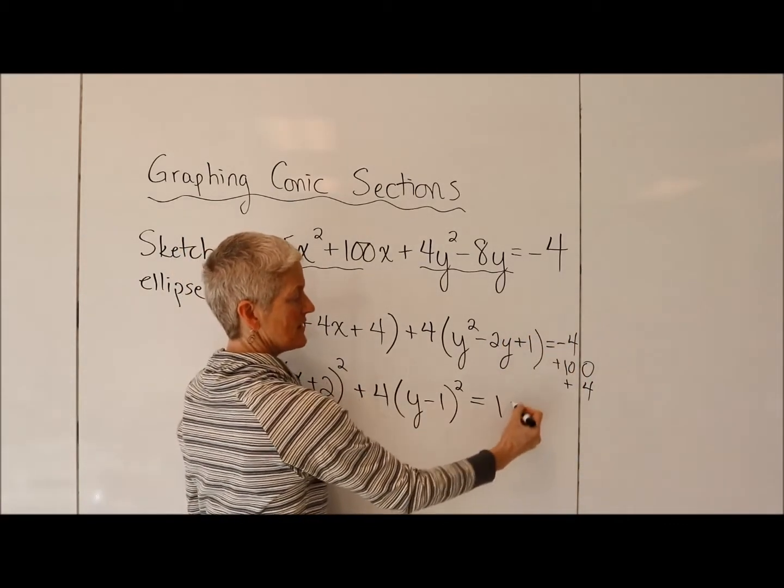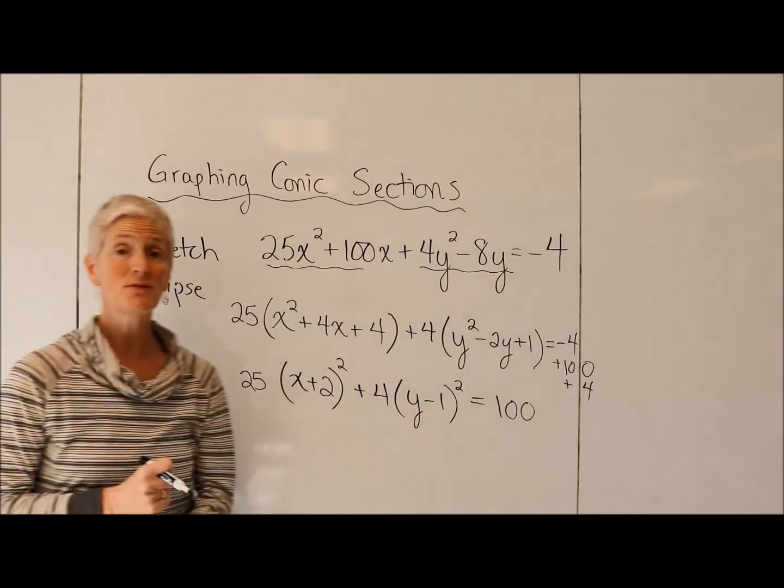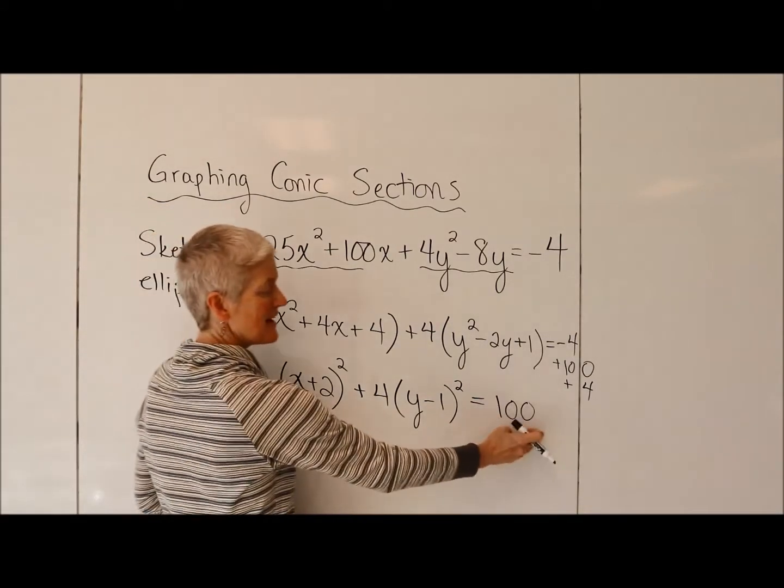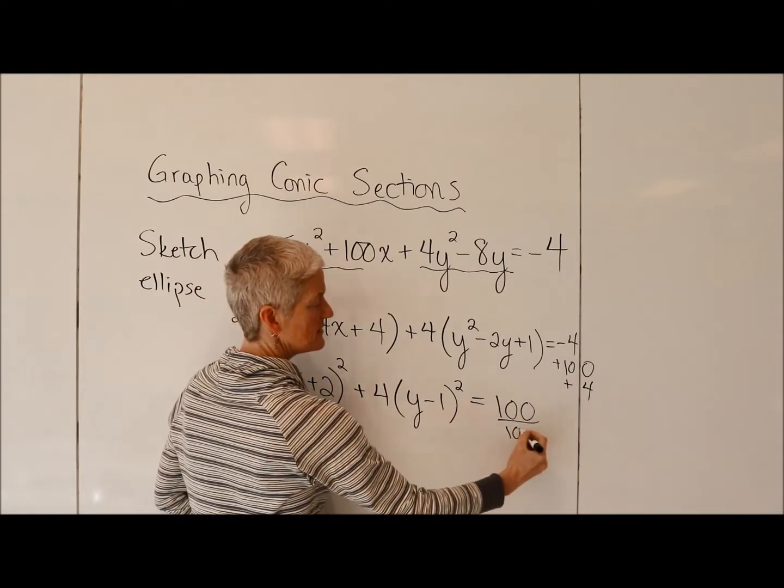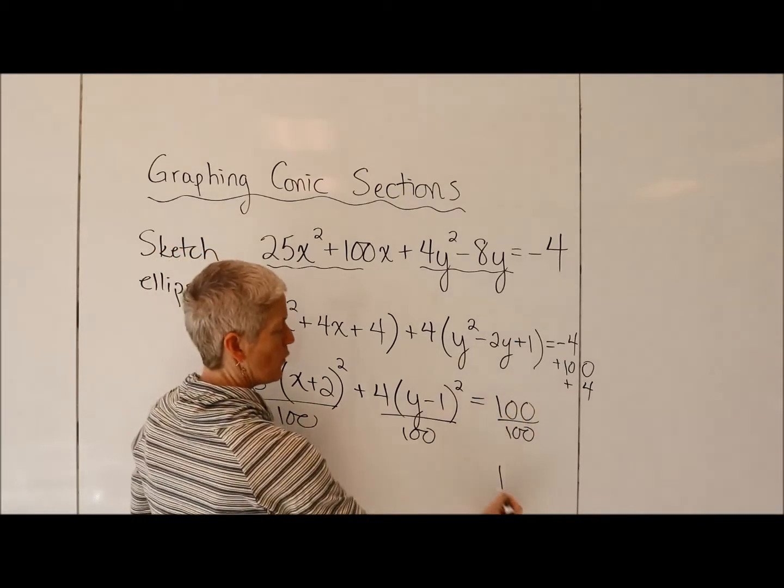Doesn't that work out nicely? Obviously, that gives me 100 on the right. Okay, I'm almost there. I want this constant to be a 1. So I'm going to divide everything by 100.